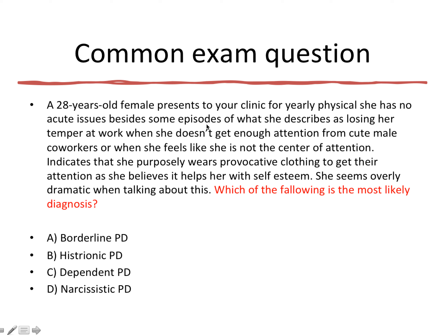With that in mind, I can focus on the question to see if anything points me to one of the answers. Which of the following is the most likely diagnosis? A — borderline: these are the people that split people into good and bad with nothing in between. Histrionic: attention seekers. Dependent: they get too close and become dependent. Narcissistic: big egos, think they're better than everybody else.